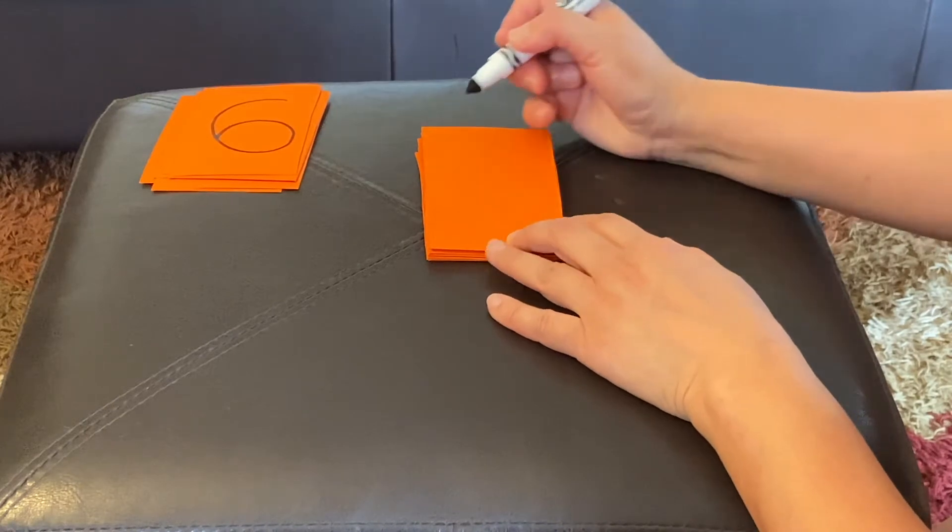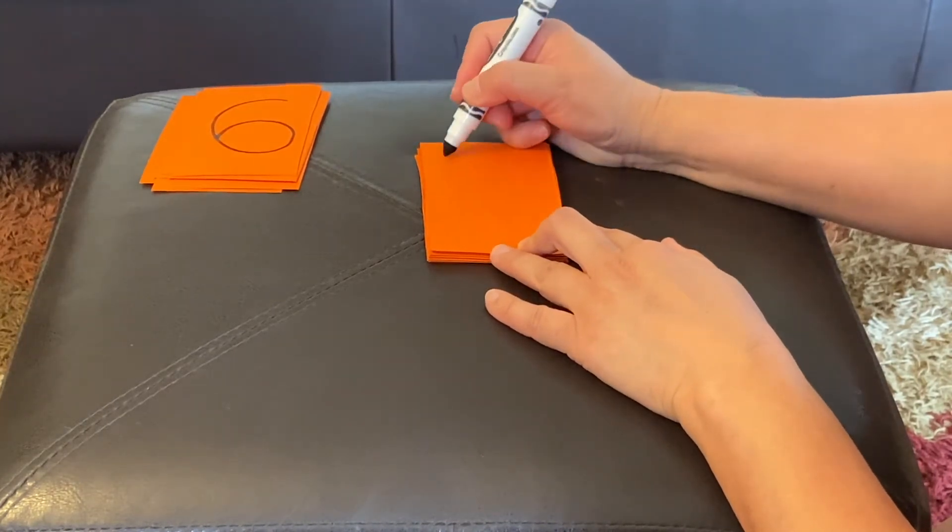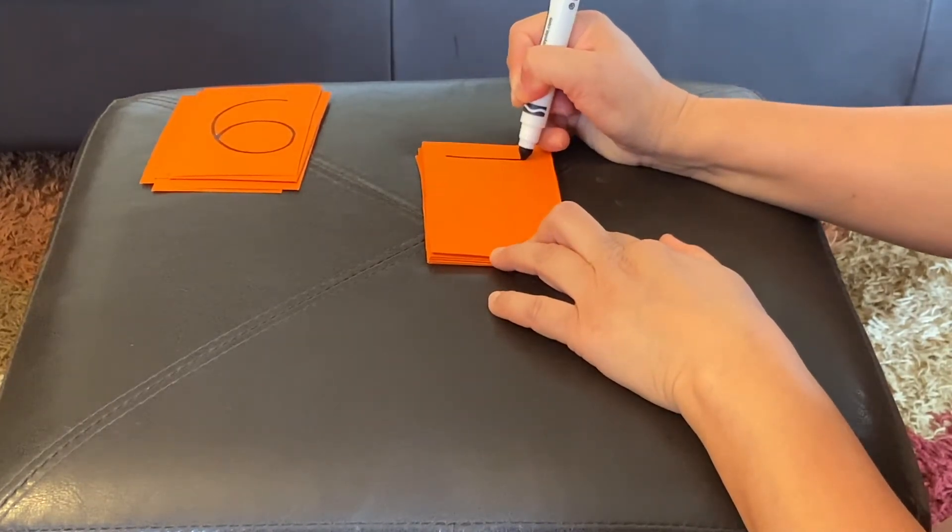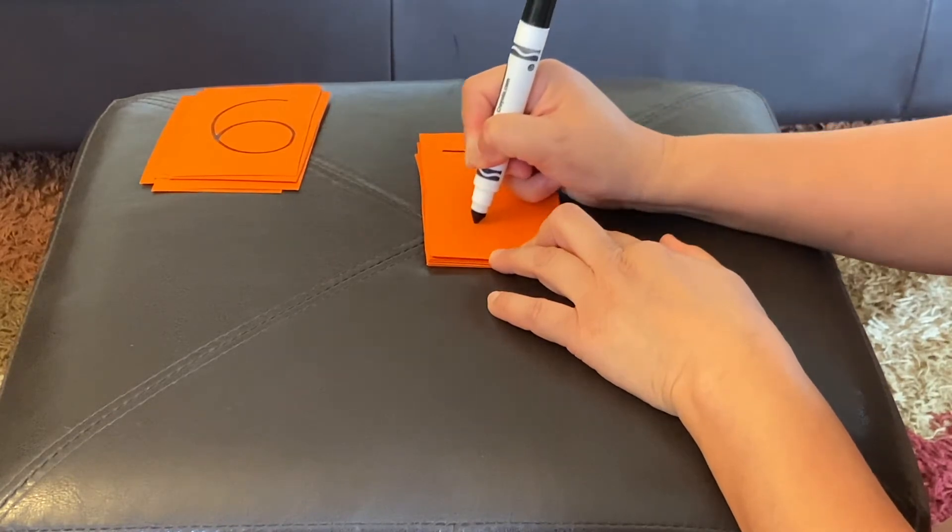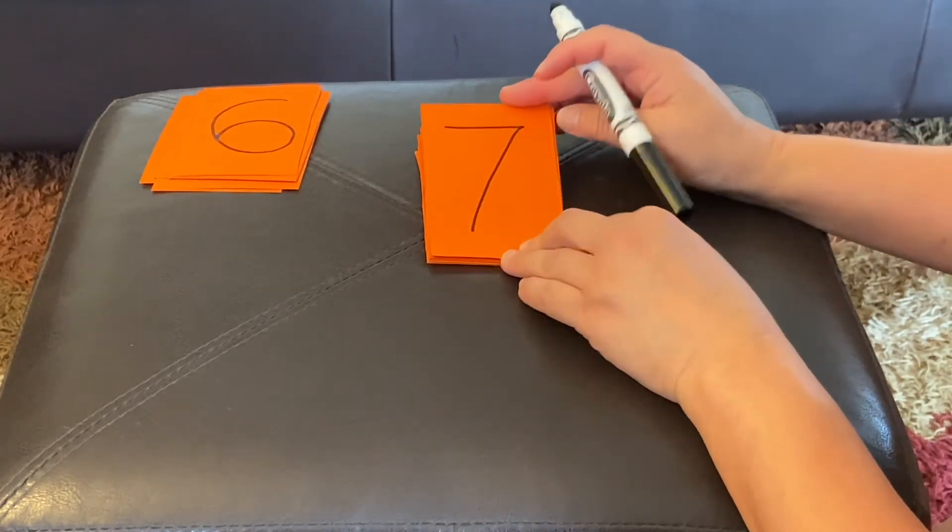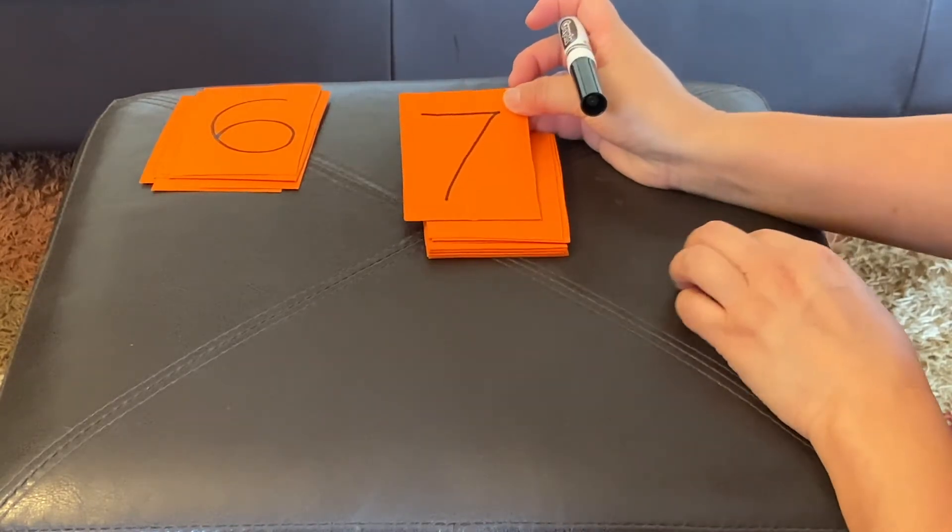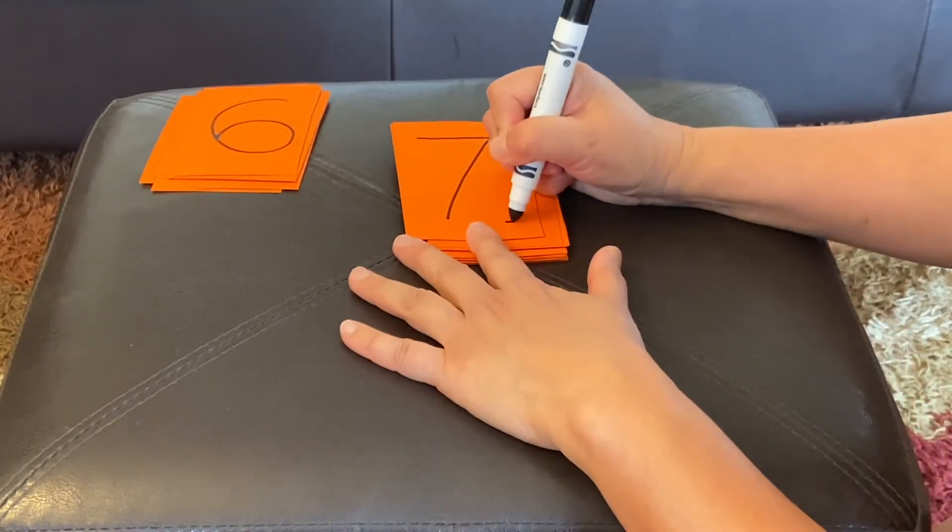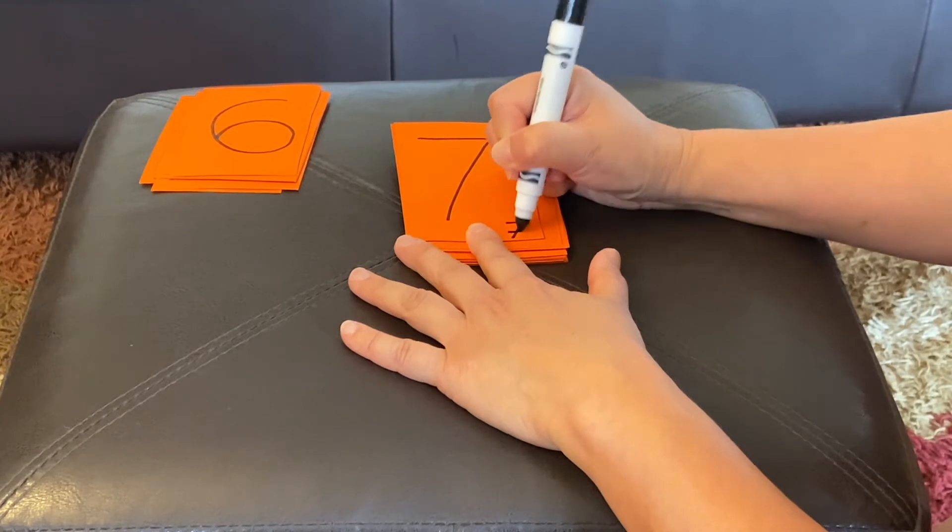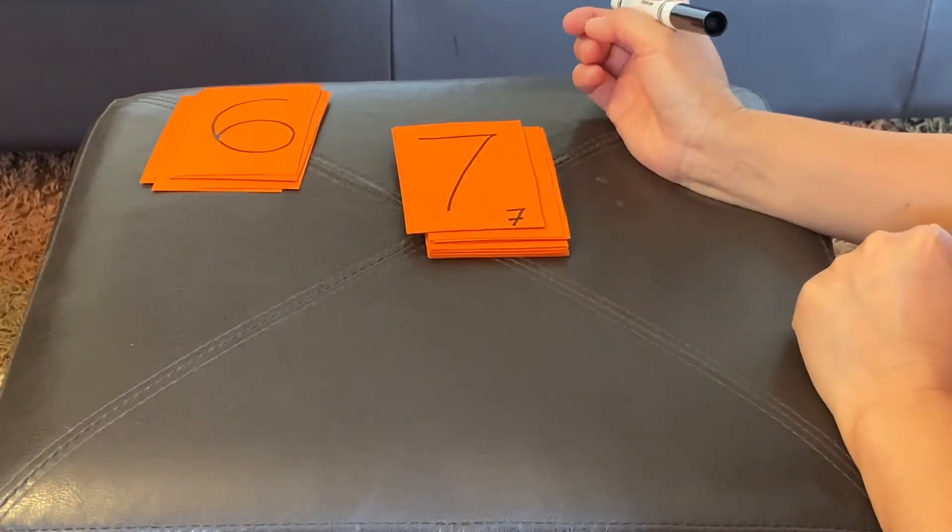Seven is all straight lines. Straight horizontal, straight diagonal. There's a seven. Sometimes you'll see people write a seven like this with a little line, and that's another way to make a seven.